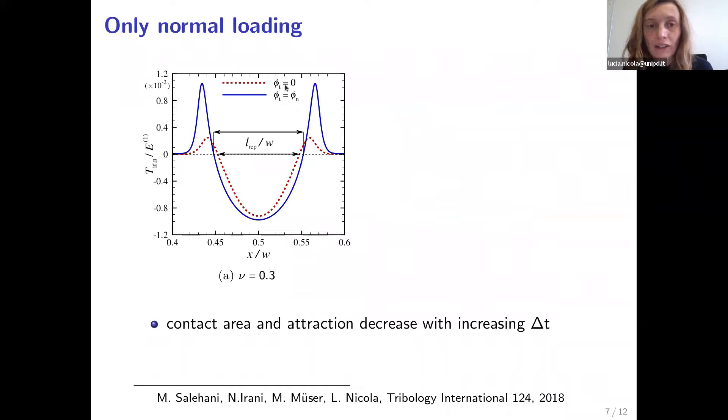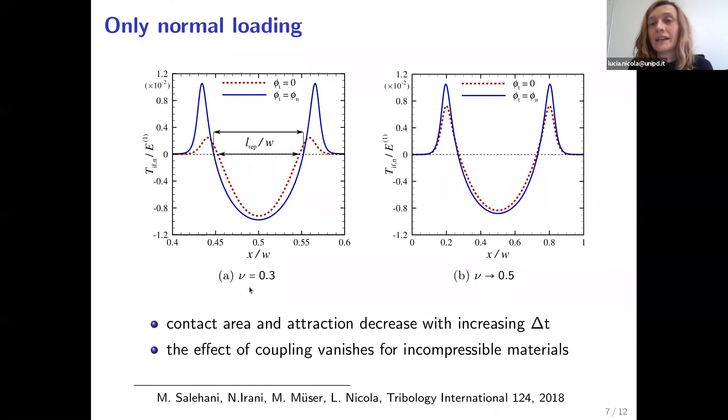We start by loading only normally and we see that if we change friction, so we have a tangential work of adhesion that is either zero or equal to the normal work of adhesion, then we see that the adhesion at the edges of the contact decreases. And this happens because there is some relative displacement between the two interfaces tangentially. And this happens only if our body is compressible, because if the body is incompressible, then it doesn't really matter what we are doing with friction, because anyhow there is no relative displacement at the interfaces and therefore there is no effect of coupling.